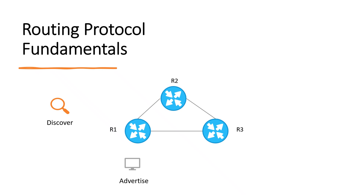Advertise — it advertises routing information about local networks to neighboring routers. Calculate — it calculates the best path to a remote network if multiple paths exist. For example, from R1 to R3, there are two paths — one through R2 and one through R3. Converge — if a link failure causes a change in the network topology and the best path is down, it recalculates a new optimal route, so you don't need a floating static route.